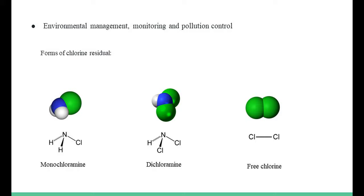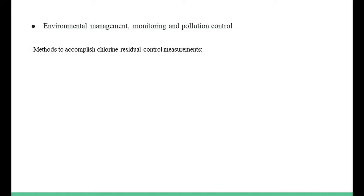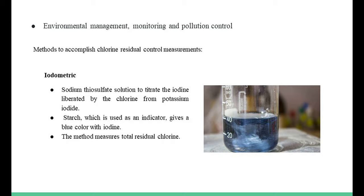Chlorine residual control measurements are accomplished in plants generally using one of four methods. Iodometric: this method uses a standard sodium thiosulfate solution to titrate the iodine liberated by the chlorine from potassium iodide. Starch, which is used as an indicator, gives a blue color with iodine. To ensure measurement of chloramines, the titration is performed in an acidic solution. The method measures total residual chlorine.